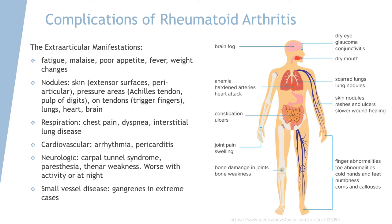On the skin, there can be nodules, especially on the side of your elbow or knee extensor surfaces, the periarticular areas, pressure areas, tendons, and also uniquely the nodules can form on the lungs, heart, and brain. In terms of respiration, you can have chest pain and dyspnea, as well as ILD — interstitial lung disease. The heart can develop arrhythmia and pericarditis, or the inflammation of the sac that envelops the heart.